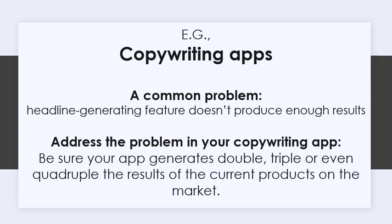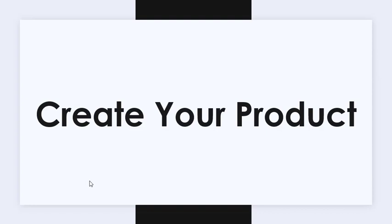For example, if you are creating a copywriting app and you see that a common problem for similar apps is that the headline-generating feature doesn't produce enough results, then you want to be sure your app generates double, triple, or even quadruple the results of the current products on the market. Up next: create your product.